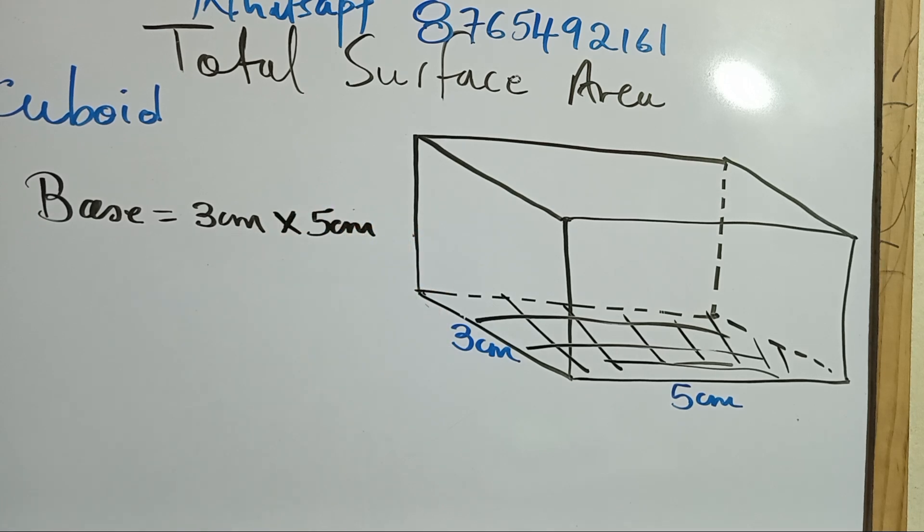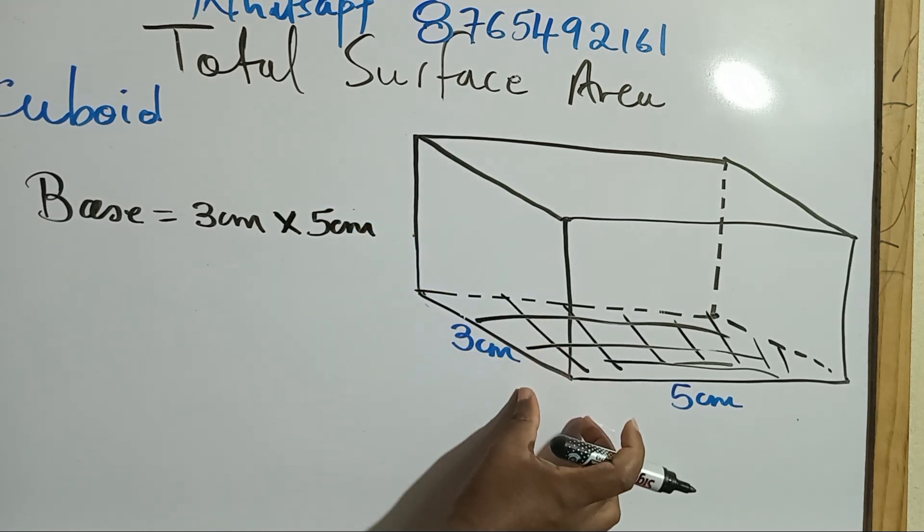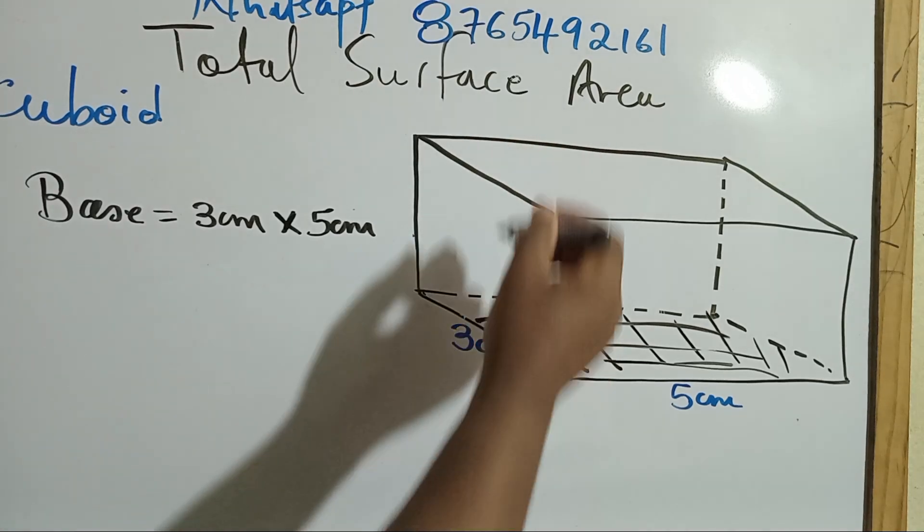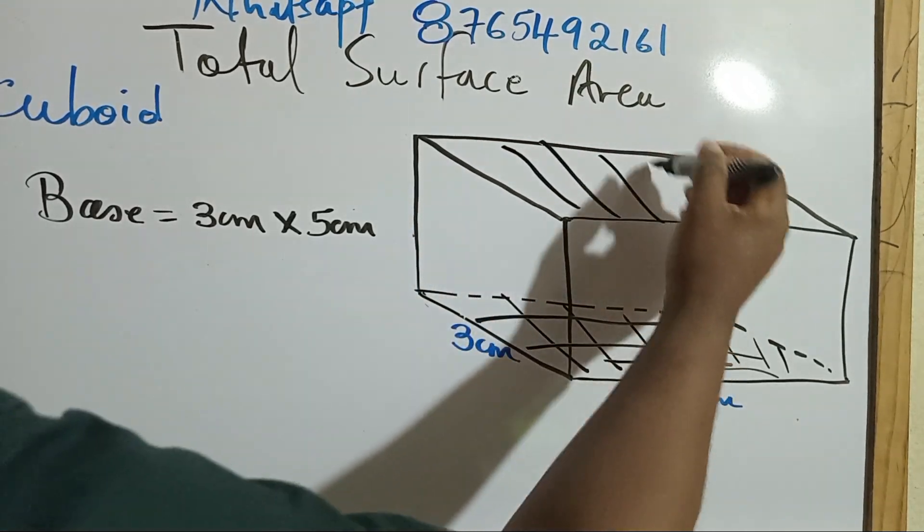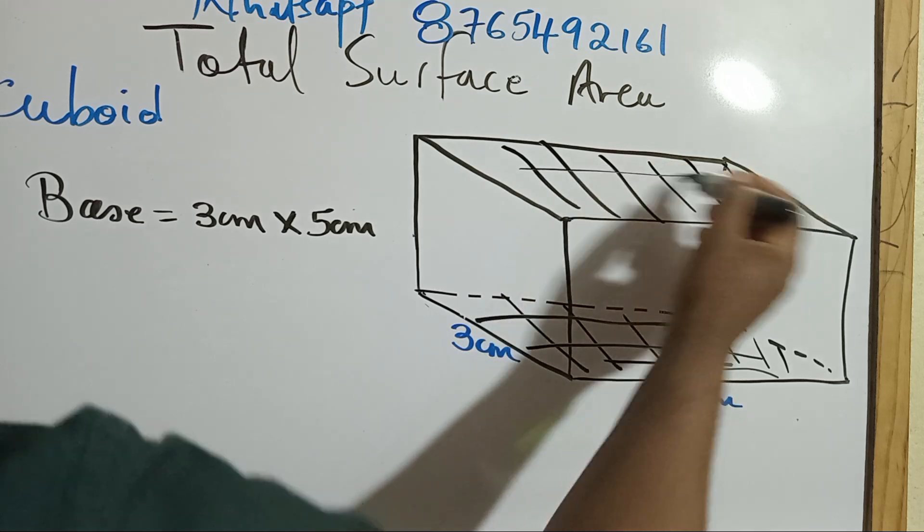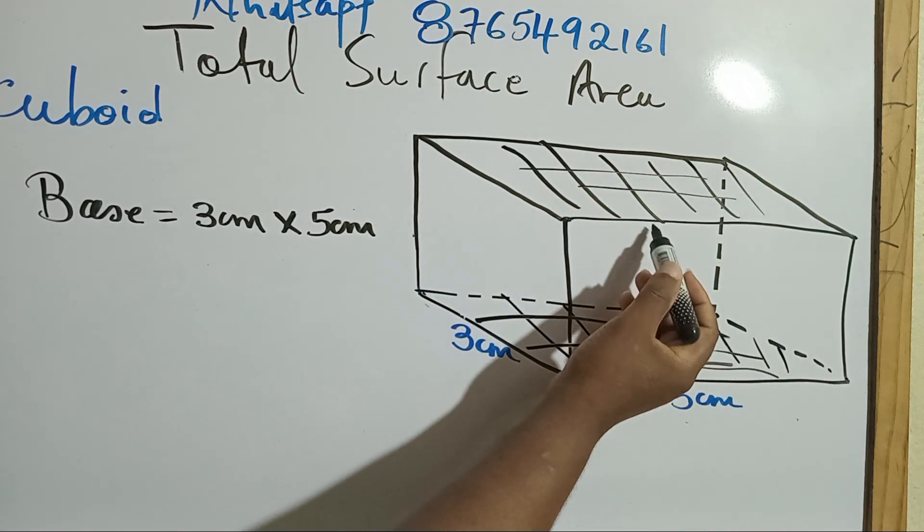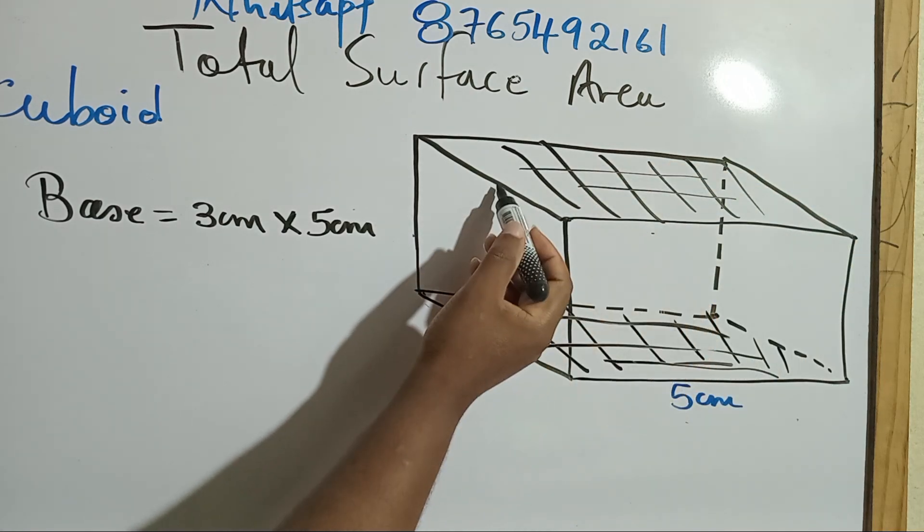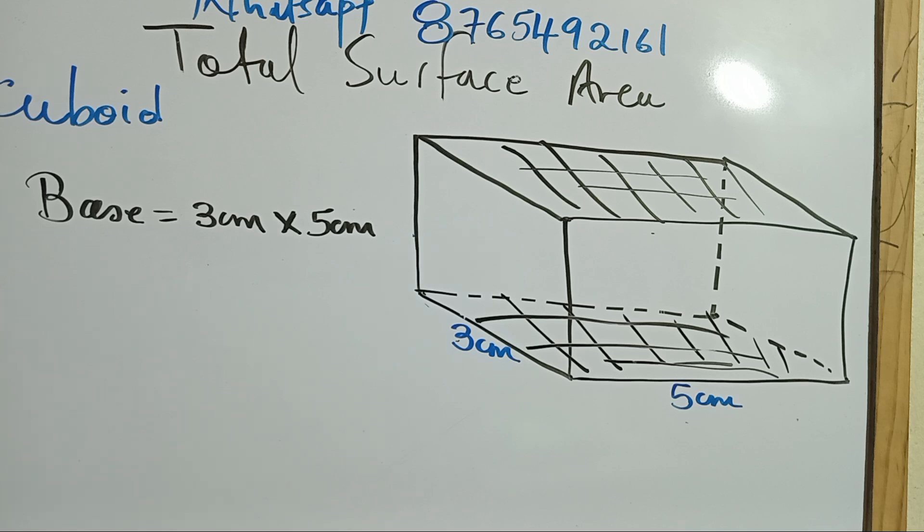So this would be the base. Now, the base and the top has the same area. Can you identify that? Because here would be five, and here would be three. All right. Cool. So we know the base and the top has the same area.